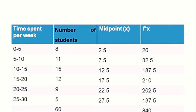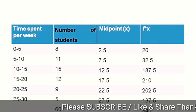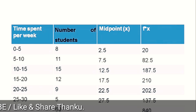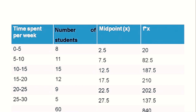While calculating, we convert the data into a tabular form with columns for class interval, number of students (f), midpoint (x), and the product fx. The midpoints are: 0–5 → 2.5; 5–10 → 7.5; 10–15 → 12.5; 15–20 → 17.5; 20–25 → 22.5; 25–30 → 27.5. Multiply f and x for each class interval, then sum all fx so that sigma fx = 840.